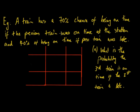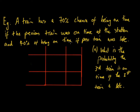In this video we're going to be looking at an example of a transition matrix and seeing how it can be used to solve a Markov chain question. The example: a train has a 70% chance of being on time if the previous train was on time, and a 40% chance of being on time if the previous train was late.